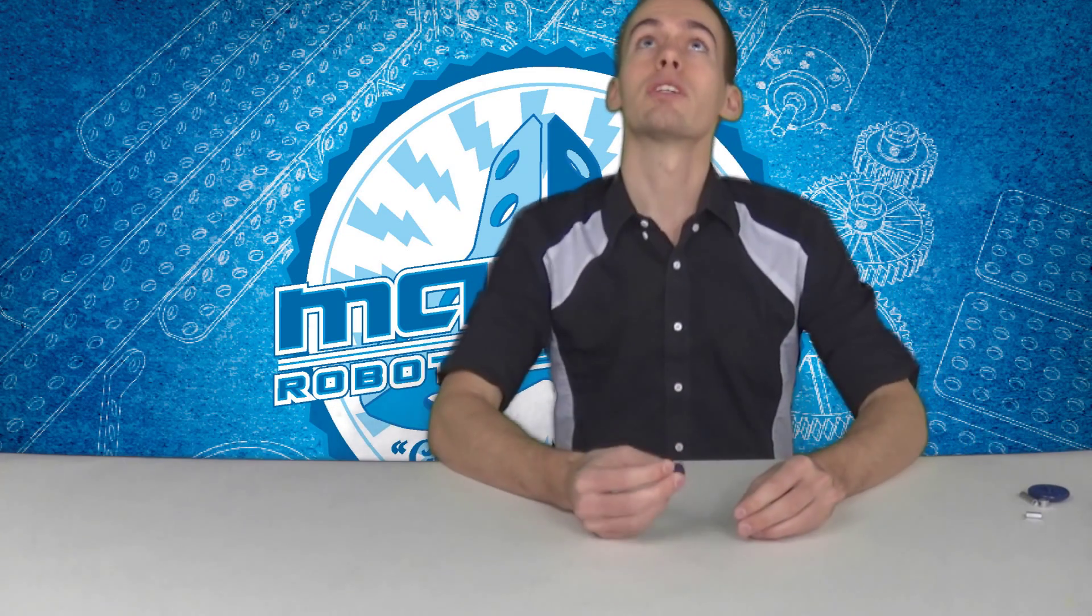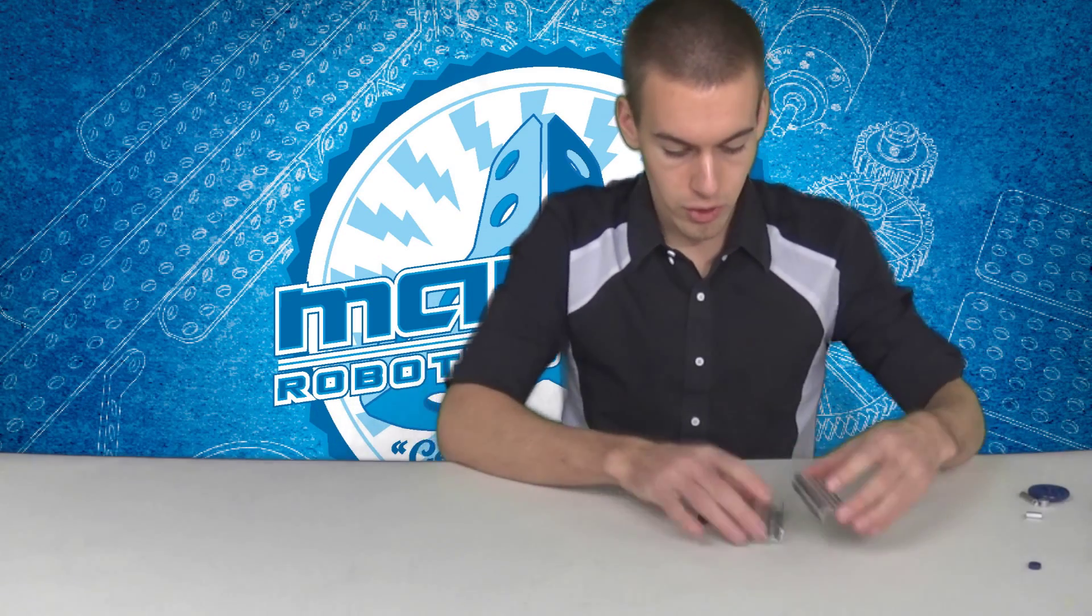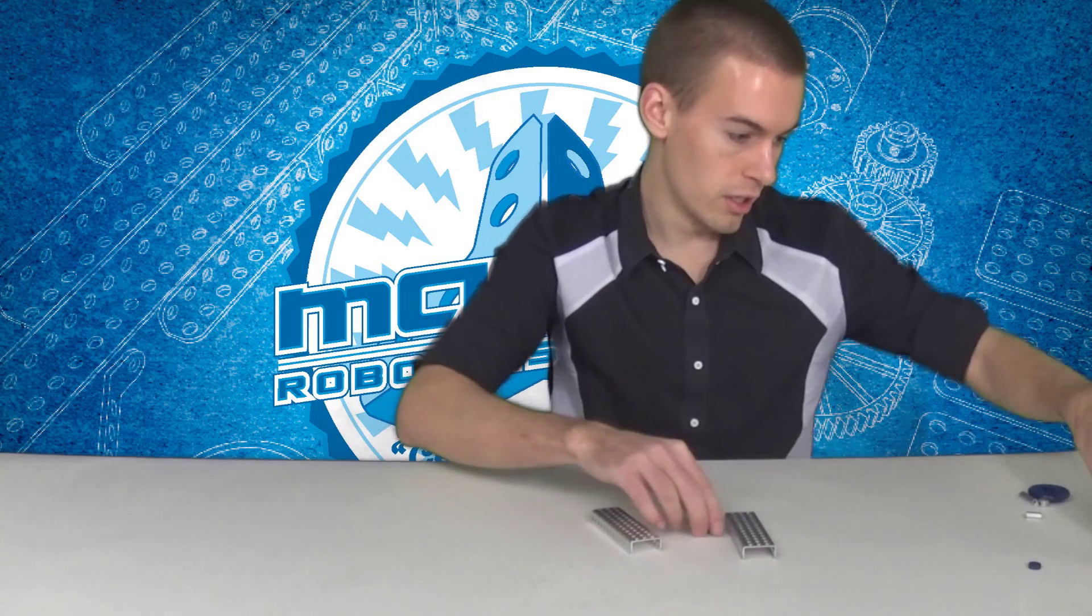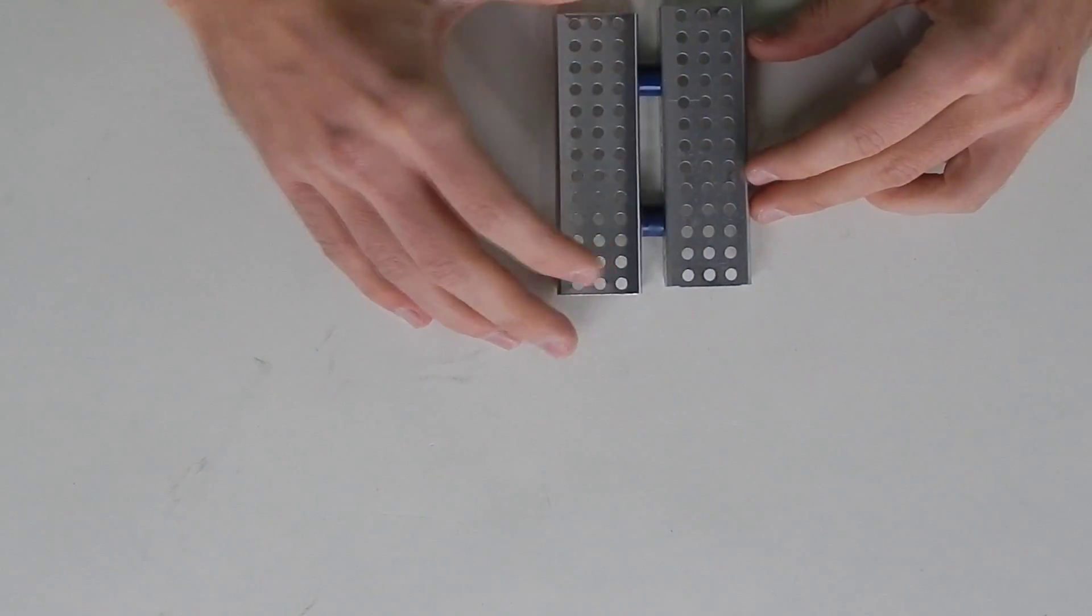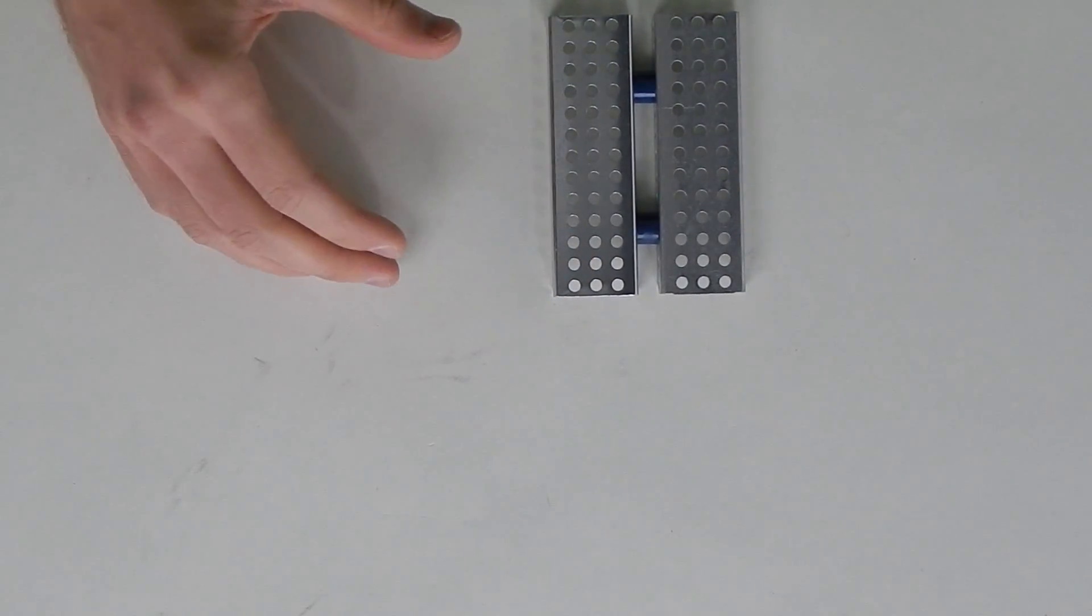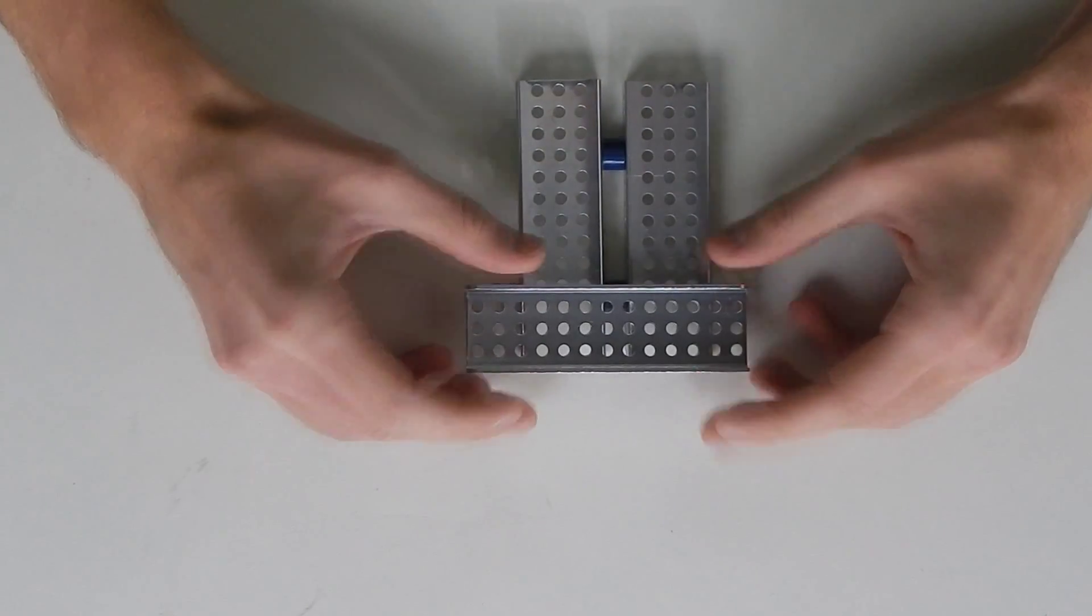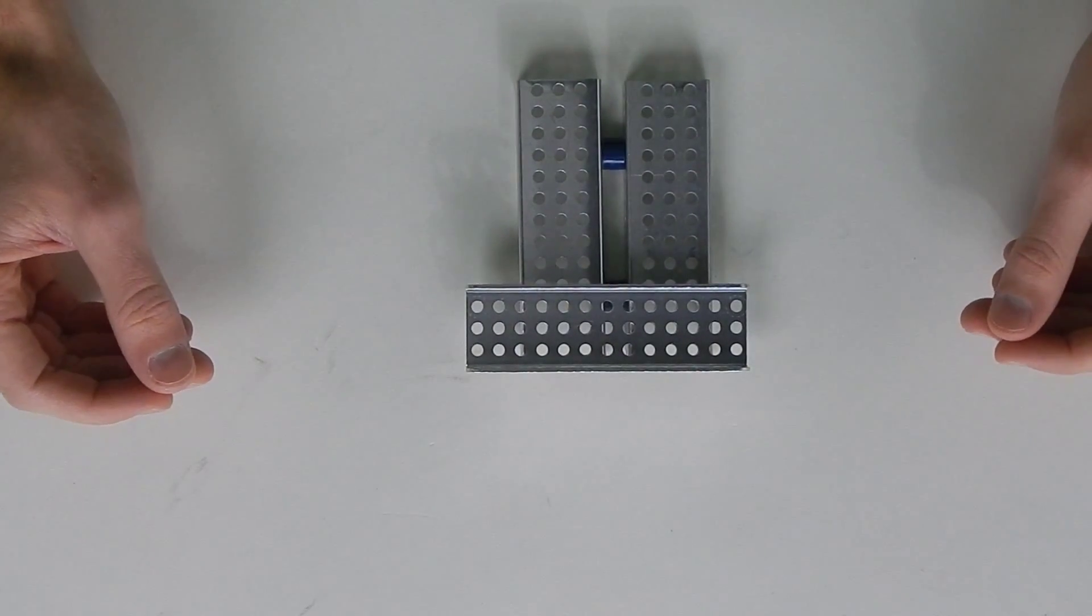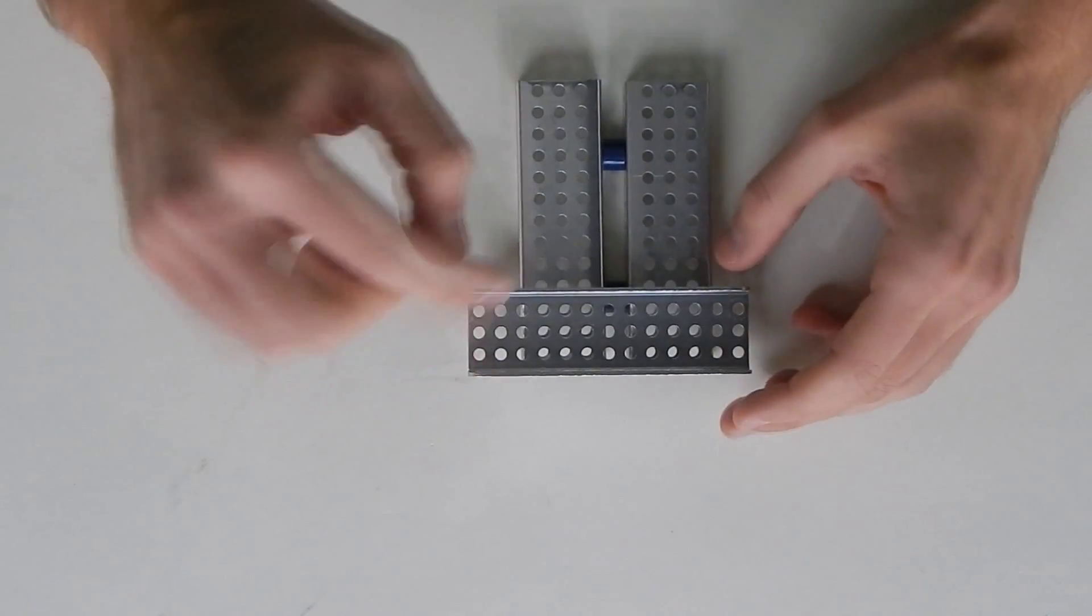You can also use it to space off other parts, and even more useful is the 8 millimeter spacer because that keeps everything on grid. If you took two C channels and space them off using 8 millimeter spacers like this, you're still going to be on grid if you put a part across here. All those holes still line up. With the 4 millimeter spacer you'd have the holes right in the middle of other holes, so you couldn't get screws through there.